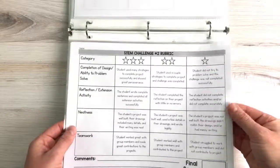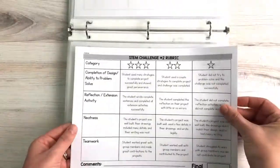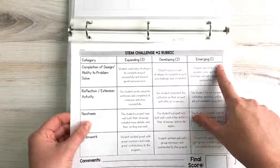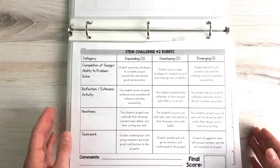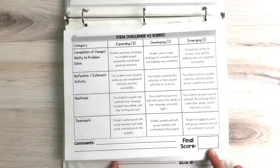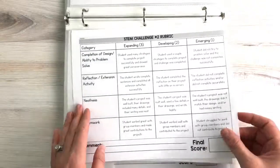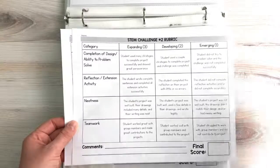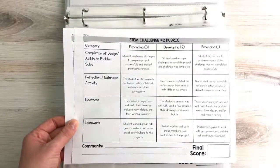We also have another option which is the number system: expanding, developing, and emerging. You can record that final score there, give any comments, and it's very simple for you to have data for science and STEM on your report cards.